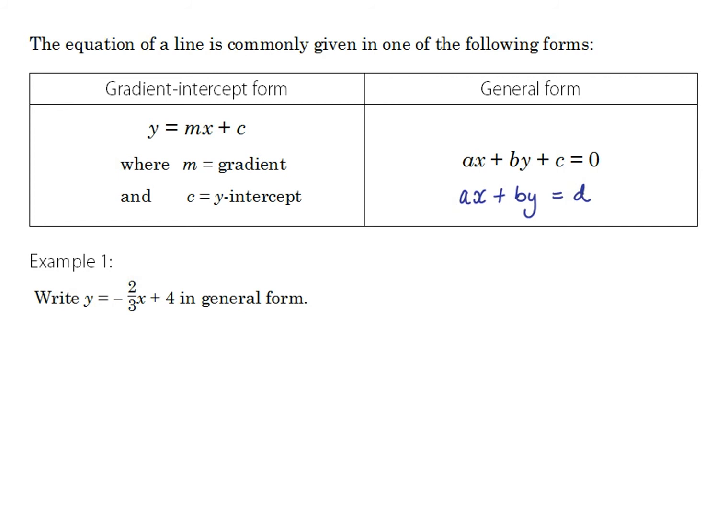Let's look at a couple of examples involving linear equations. In example 1, we have an equation given in gradient-intercept form and we want to convert it into general form. As mentioned, the main reason to use general form is usually to avoid fractions — and this equation has a fraction because its gradient is negative two thirds.